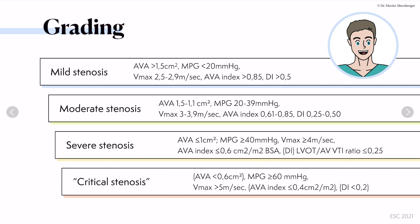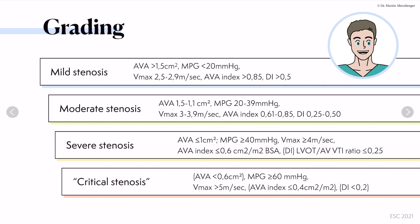I also want to mention the aortic valve index, because if you have slim, small, or large patients, you can and should index the aortic valve area. If you index it with 0.61 to 0.85, it's a moderate stenosis. Furthermore, the dimensionless index should be mentioned, especially in the case of a severe stenosis.